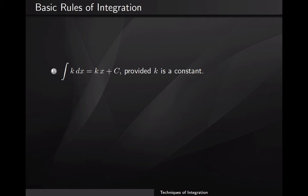Before going into the sequence of videos, I want to give a review of the basic rules of integration that we'll need to work on the more interesting ones. The first rule: if you have a constant k — a number like 2, 3, 4, or any other number — times dx, the integral is just the constant times the variable of integration plus c. For example, the integral of 2 dx is 2x plus c.